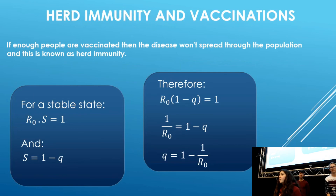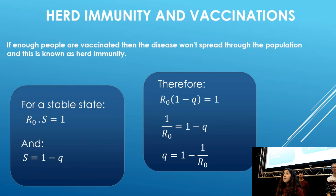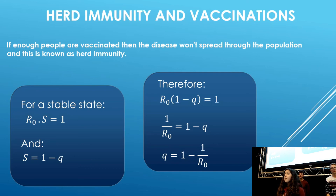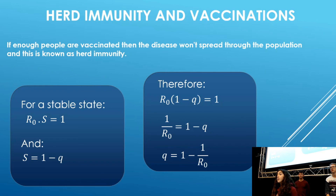As a group, we also looked at herd immunity and vaccinations. For any disease, there's a critical immunisation threshold, which we called Q. This is the percentage of the population that need to be vaccinated to stop the disease from spreading. For a stable state, the reproduction number times the number of susceptible people equals one. Also, the number of susceptible people equals one minus Q, as vaccinated people aren't susceptible. Substituting S as one minus Q, the reproduction number times one minus Q equals one. Rearranging this, Q equals one minus one over the reproduction number. This can be used for different diseases to work out how many people need to be vaccinated.